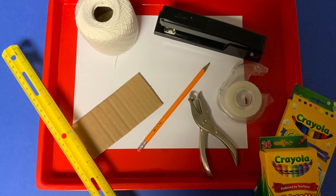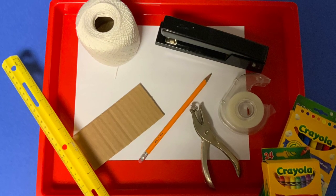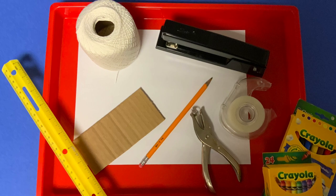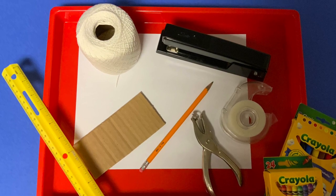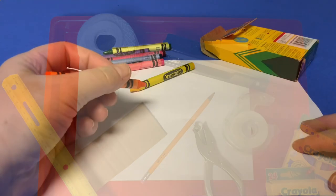Look around the house with an adult for these supplies. You'll need an eight and a half by eleven size piece of paper, a ruler, string, stapler, pencil, tape, hole punch, cardboard, and crayons or markers.